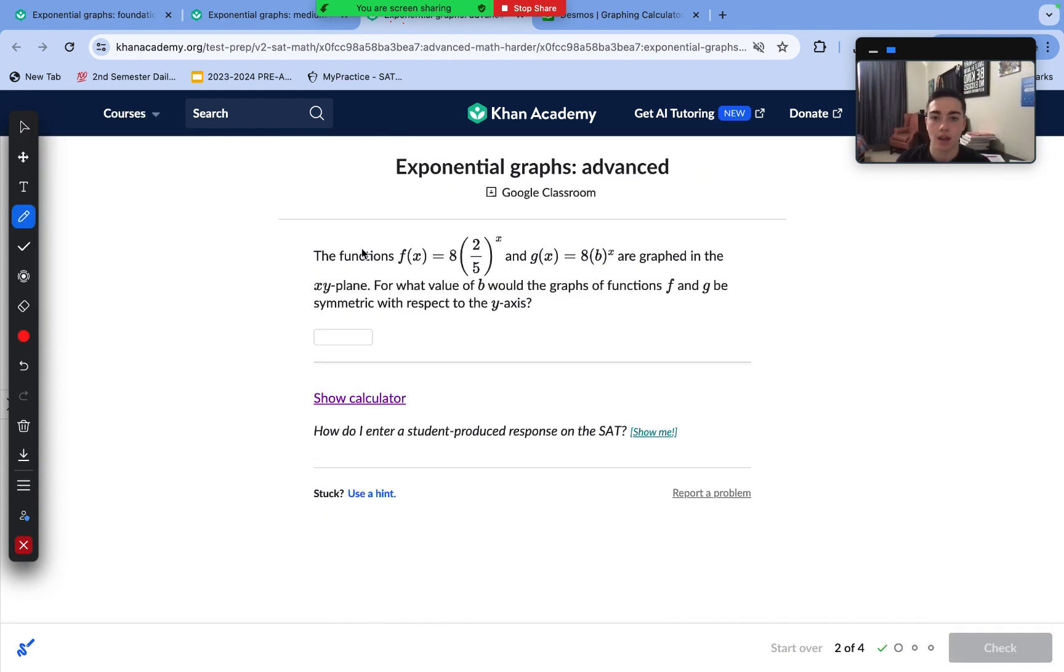Now we have another one where f(x) is A(2/5)^x, and g(x) is A(B)^x, and they're graphed on the plane. For what value of B would they be symmetrical with respect to the y-axis?